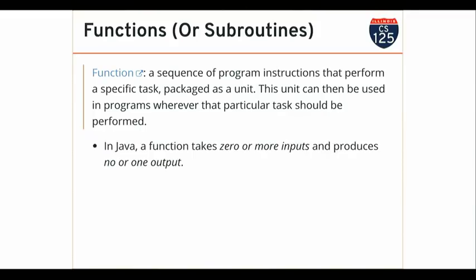In Java — and this varies by language — a function takes zero or more inputs and produces zero or one output. You can think of a function as a black box: you give it some data, it turns around and hands you back a result. In Java, my function normally returns one result — one value. Sometimes it makes sense to have functions that don't return anything. I can't return multiple values in Java, though in other languages you can. We'll see ways to accomplish the same thing later.